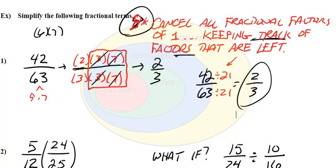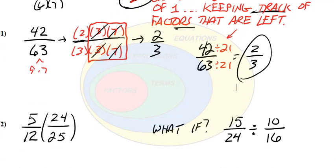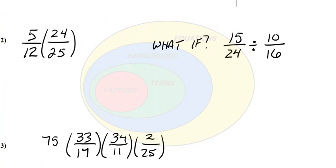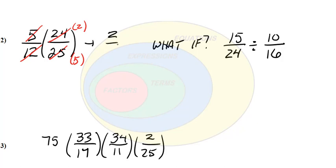Looking at a practice problem: 5 and 25 — we have a factor in the numerator and one in the denominator. The 5 cancels with a factor of 5 in the denominator, leaving a factor of 5 in the denominator. For 12 and 24: 12 goes into 24 evenly, leaving a factor of 2. So this equals 2 fifths.